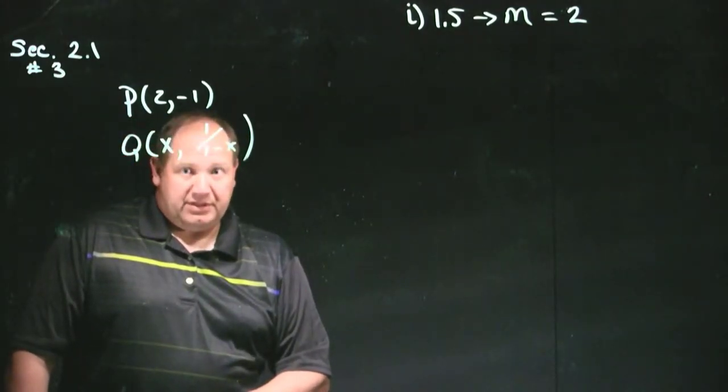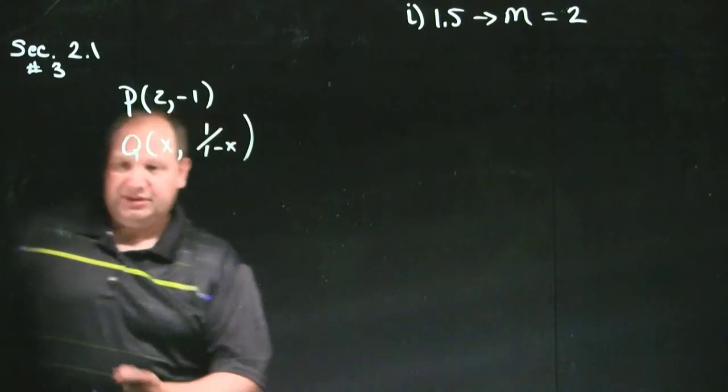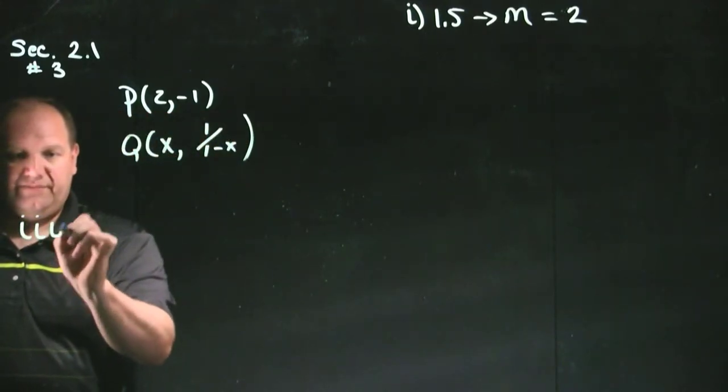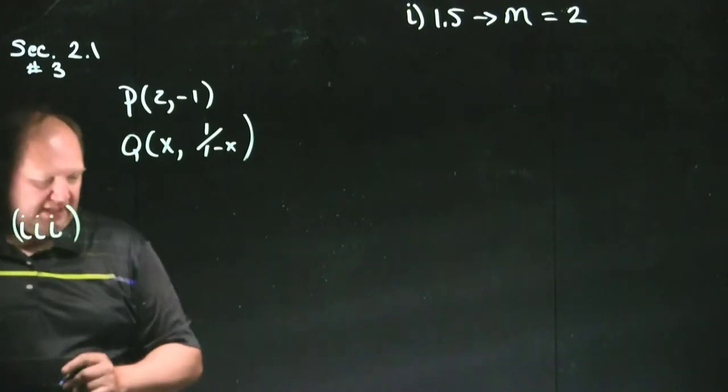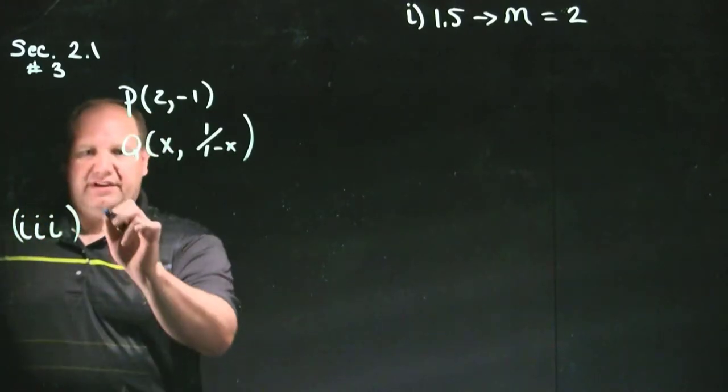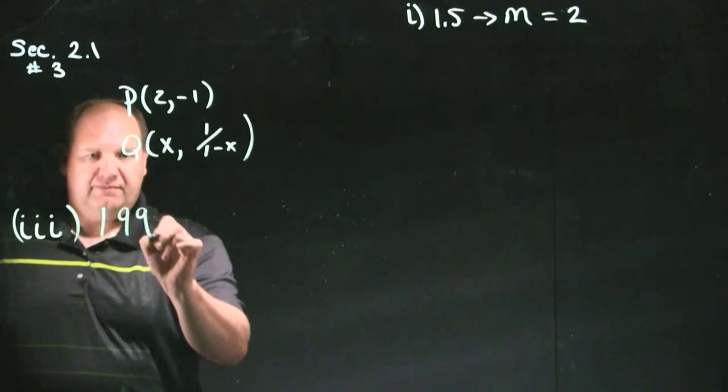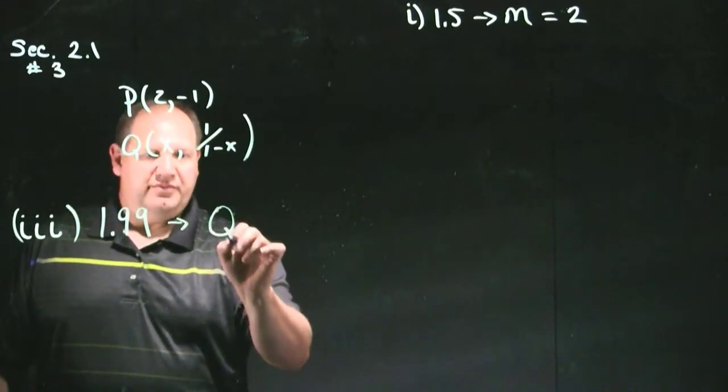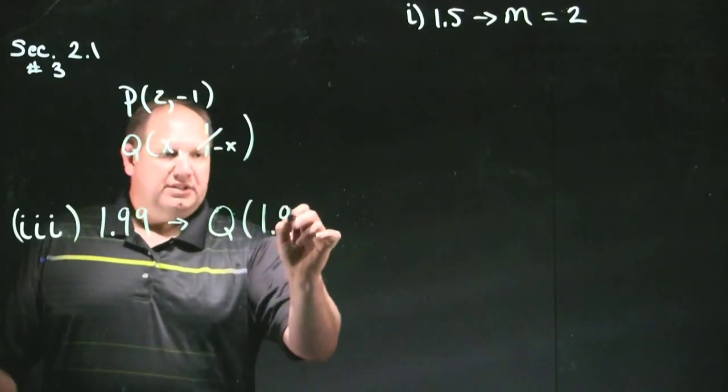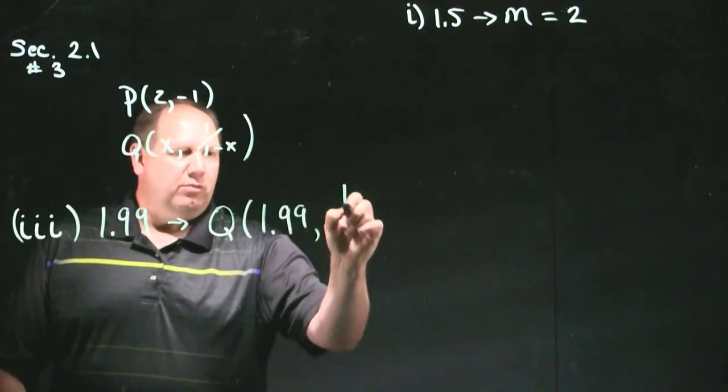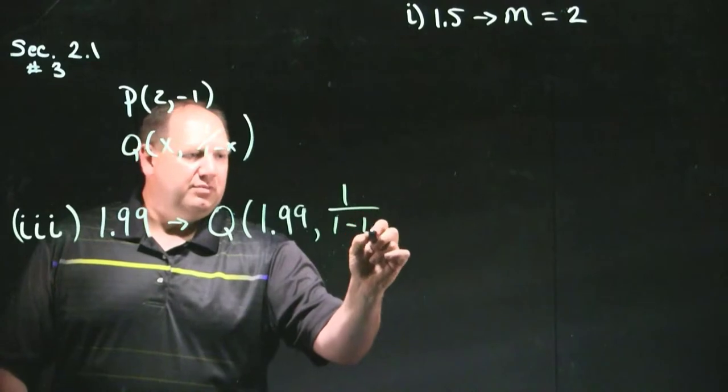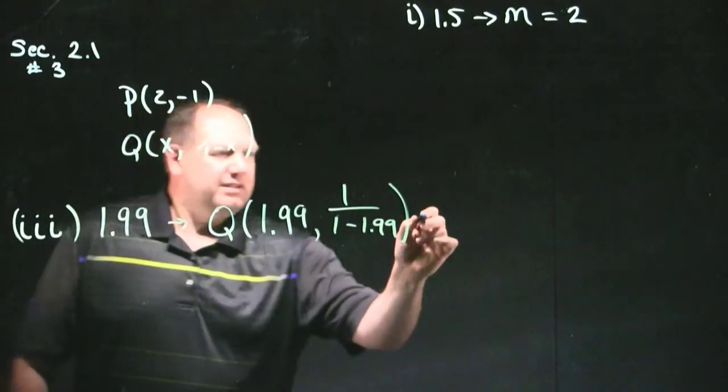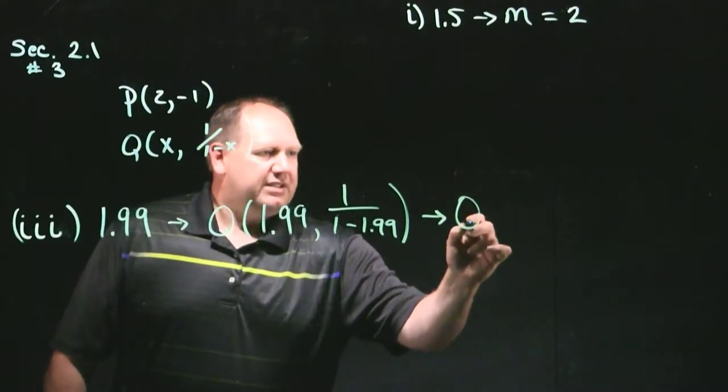Okay, let me erase. Now I'm going to leave part 2i to you. Let me do 3i. So this is 3i. And 3i is at the value 1.99. So what we're really talking about then is q, a value at 1.99 comma 1 over 1 minus 1.99.